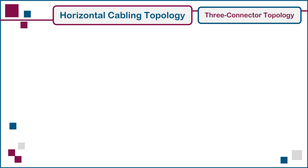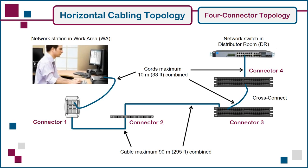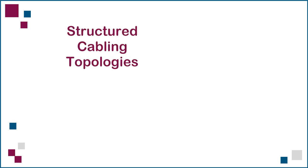The fourth and final combination is the four-connector topology. As illustrated here, it consists of both a consolidation point connector near the work areas and a cross-connect in the distributor room, to maximize service and administrative flexibility. This brings us to the end of lecture two, titled Structured Cabling Topologies. Thank you for watching.